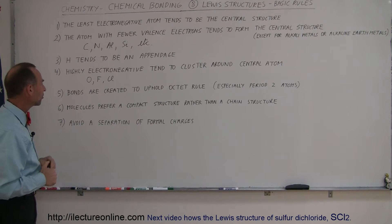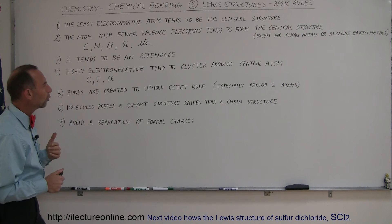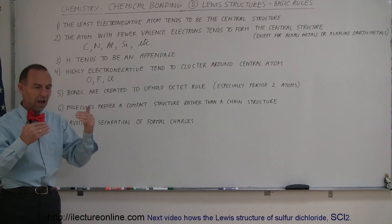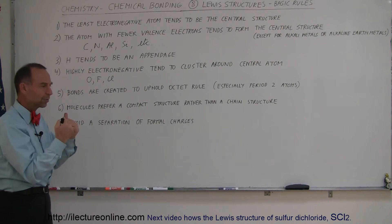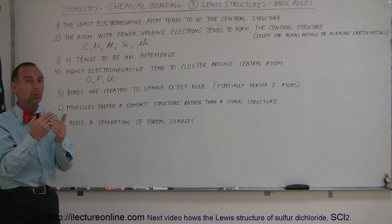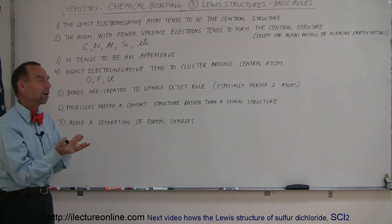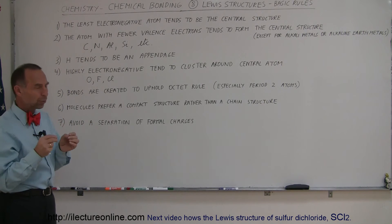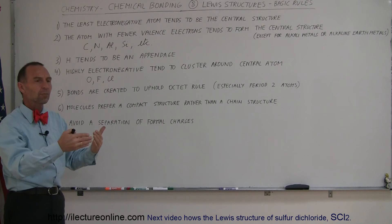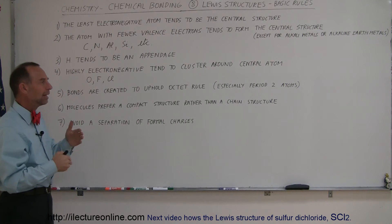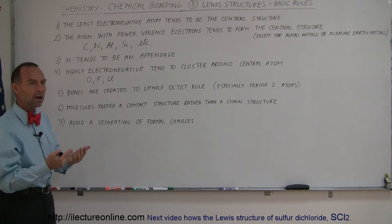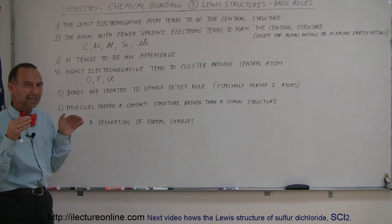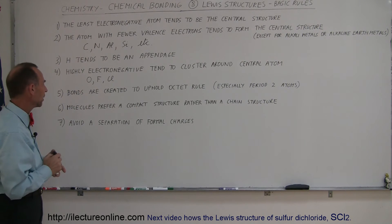Rule number five: bonds are created to uphold the octet rule. We talked about the octet rule before, and sometimes when there are options on how the atoms can bond together, they will prefer the one that will put eight valence electrons around each atom. The octet rule is something that nudges the bonds into a particular type if there's more than one option possible with the electrons that are available — it guides the bonding of the molecules.